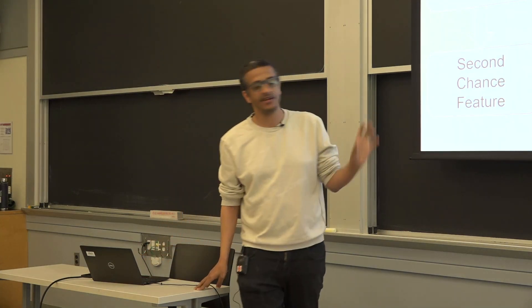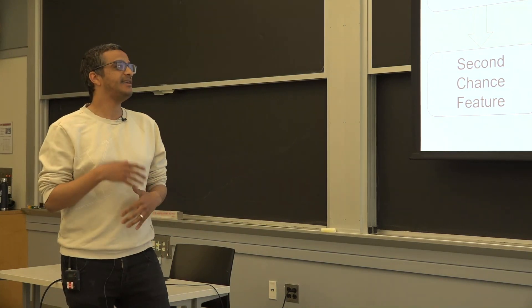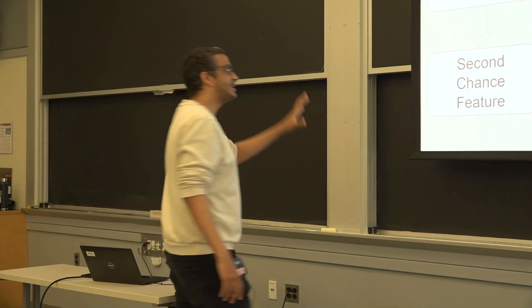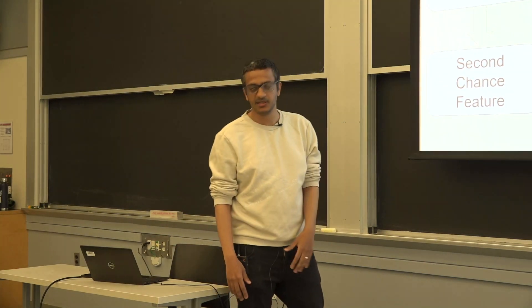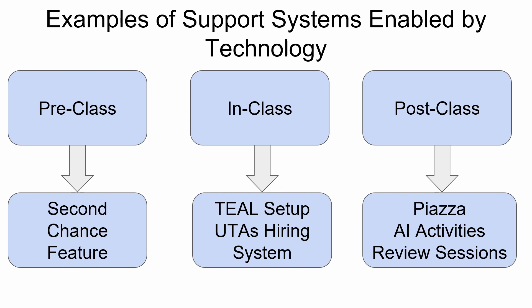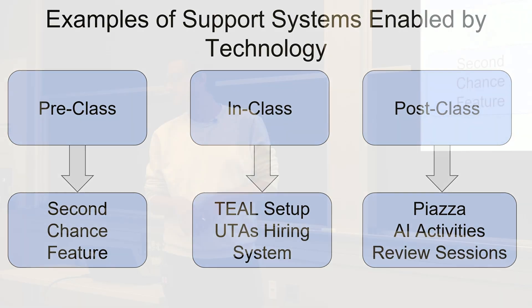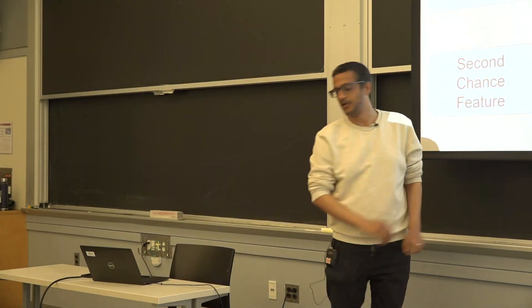I'm going to speak about particular examples of technological support systems I created in the courses. For the pre-class, I created the second chance feature. For in-class, I want to say something about the undergrad TA role and how technology streamlines hiring. For post-class, there are interactions through Piazza, some usage of AI, and Zoom review sessions — forming a support system for each part of the course.